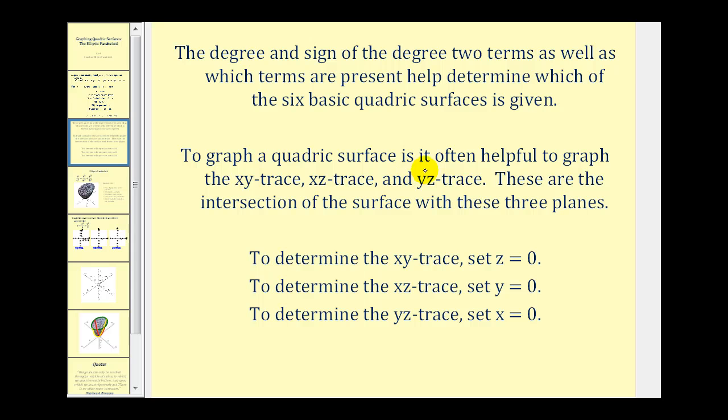Then, to graph a quadric surface, it is often helpful to graph the xy, xz, and yz traces. These are the intersection of the surface with these three planes. To determine the xy trace, we'll set z to zero. To determine the xz trace, we'll set y to zero. To determine the yz trace, we'll set x to zero.